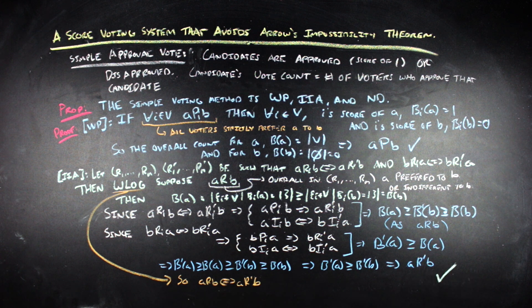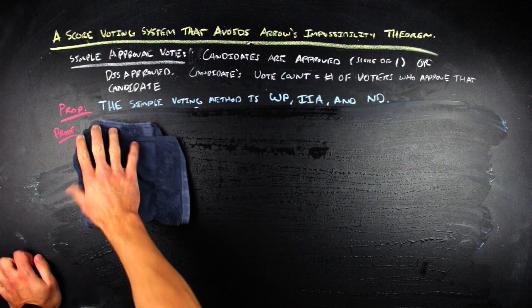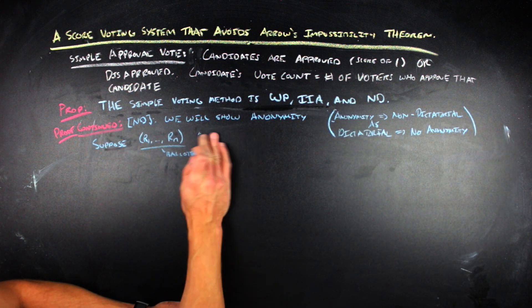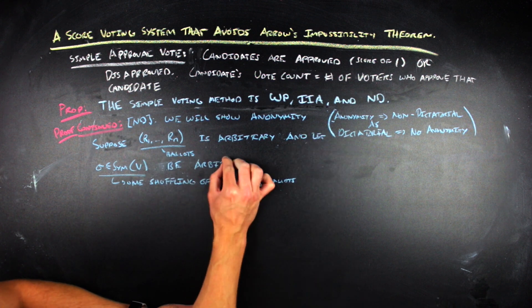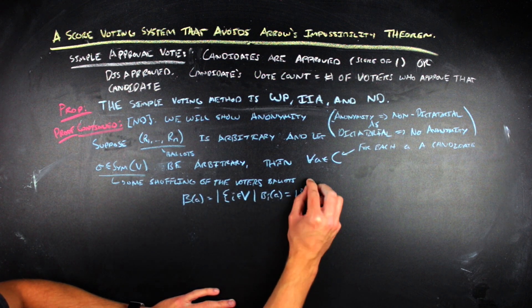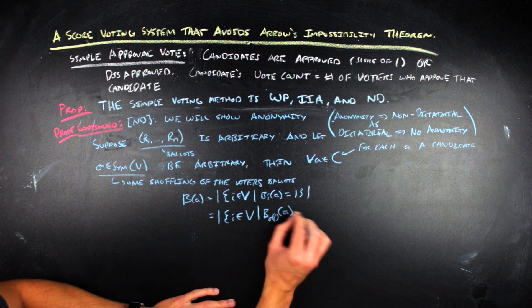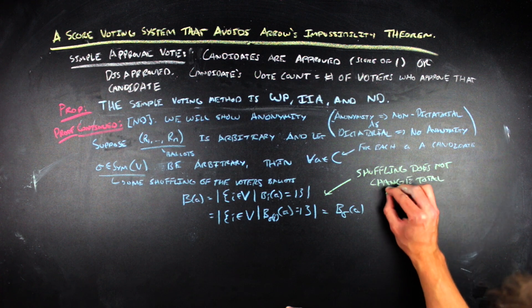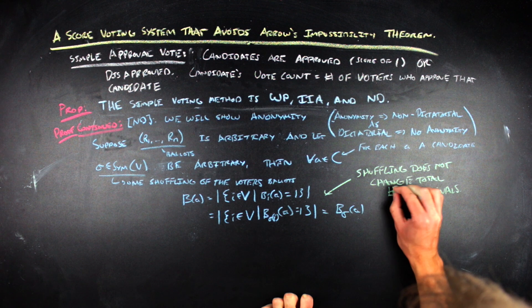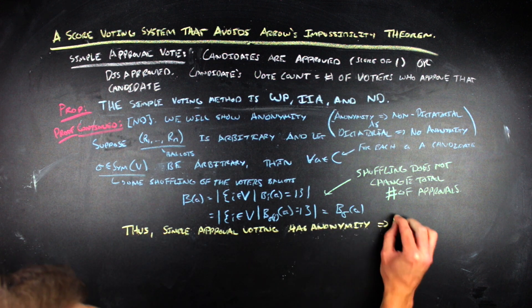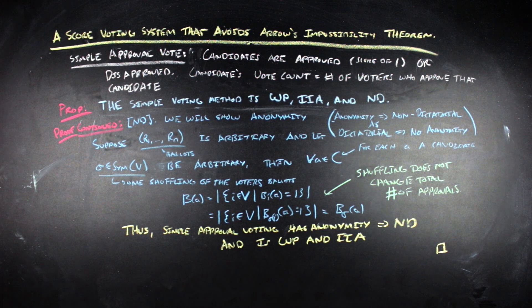On the board, I did a little bit more strict inequality work as well, so you can see how you get some of those inequalities. And lastly, for non-dictatorial, we can go ahead and show anonymity, which will imply non-dictatorial. We need to show that overall preferences amongst candidates do not change when the ballots are permuted between the voters. For a given arbitrary candidate A, the vote count for A corresponds to exactly how many approvals A received. Any permutation of the ballots will still have the same total number of approvals present for candidate A, and thus the overall preference for A remains unchanged after the ballots are shuffled. Since candidate A was arbitrary, this holds for all candidates in the election — all candidates will receive the same score between the two elections. So the approval voting method has anonymity and thus is non-dictatorial.